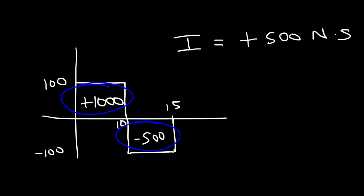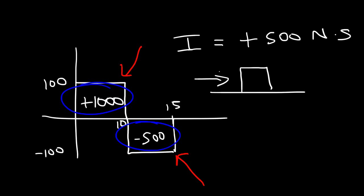The impulse is negative if it's below the x-axis, and positive if it's above. A positive impulse means the force accelerates the object in the positive x-direction; a negative impulse means the force pushes the object in the negative x-direction.